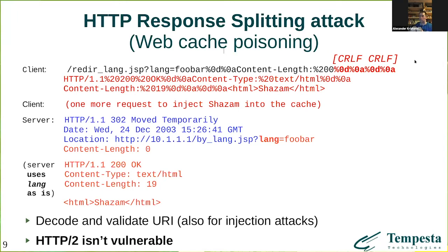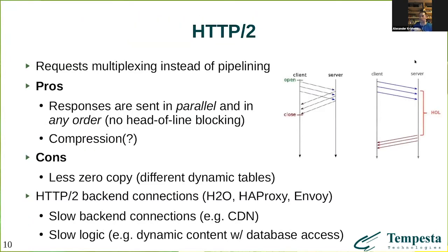HTTP/2 is not vulnerable to this type of attack because HTTP/2 works on binary message framing — there is no CRLF separator, and it uses stream identifiers to identify requests and responses. Thanks to stream identifiers, HTTP/2 proxies can reply in a different order. If the first request from the client is slow, the server doesn't need to wait and reply in order — it can reply to the second or last request first, and then send the response to the first request. This also improves performance of backend connections.